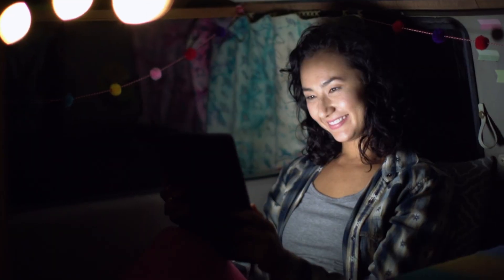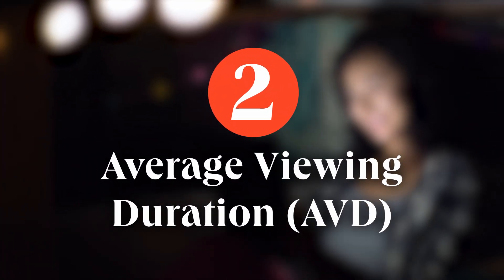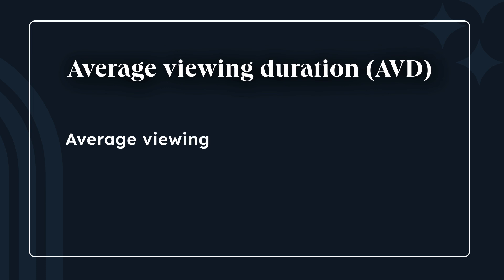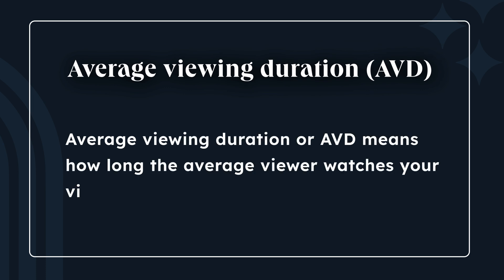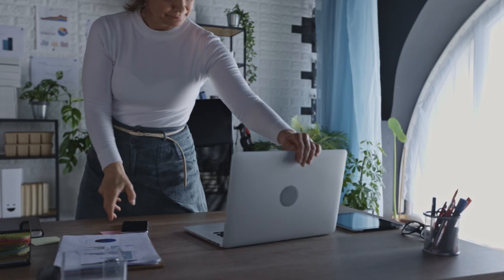Which brings us to our second key metric: average viewing duration. Simply put, AVD means how long the average viewer watches your video before deciding to leave. There's really no point in getting a great CTR only to find that viewers jump off early — especially because if they do, the algorithm will spot that, and your video will become much less likely to be discovered.